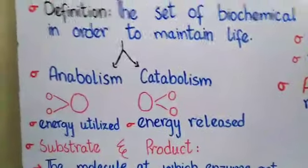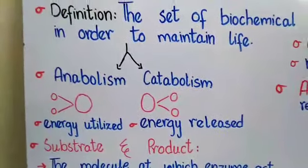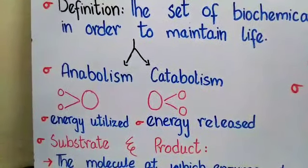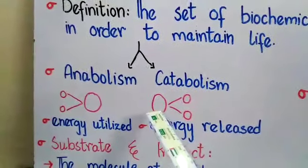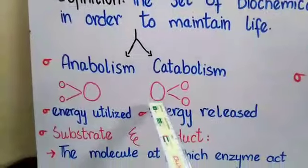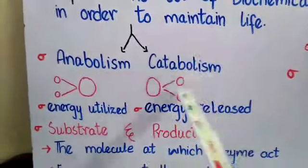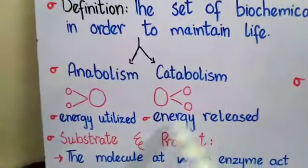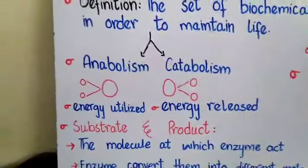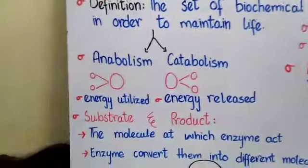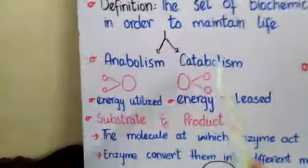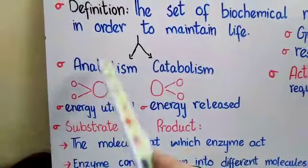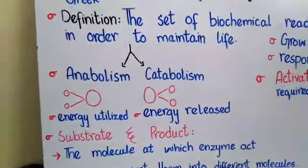The next category is catabolism. It is a set of biochemical reactions in which larger molecules are broken down into smaller ones. In catabolism, energy is released, and this released energy is then transferred and used again in anabolism.